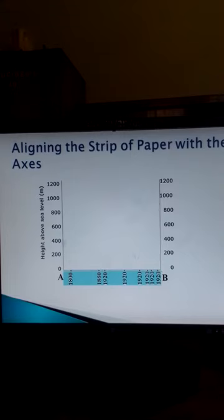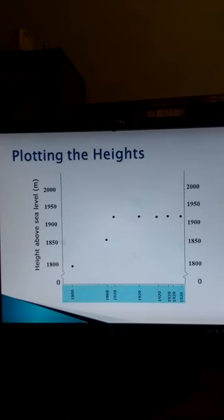The next step is to plot the heights. So this being our strip of paper with the heights and the marks along the horizontal axis, we are able to plot the heights on this graph paper. So the first height here is 1800, so you can place a mark here.